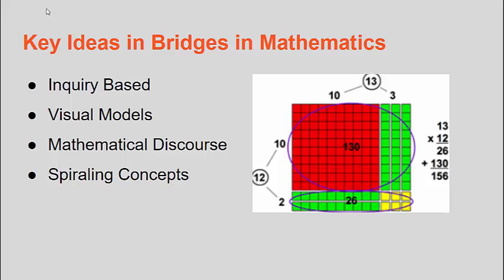There are four big ideas which serve as a foundation across the K-5 Bridges in Math program. The program is inquiry-based, meaning that it uses questions to drive student learning and problem solving. It encourages ongoing use of visual models to explain thinking or to justify reasoning. Students are encouraged to engage in mathematical discourse, meaning that beginning as early as kindergarten, students are regularly challenged to explain their thinking using mathematical terms. They are coached in how to question each other, discuss possible solutions, piggyback on ideas, and challenge the thinking of others. The program is also deeply rooted in a spiraling approach, realizing that visiting and revisiting concepts in an ongoing and scaffolded way ensures deep understanding and promotes their ongoing use.